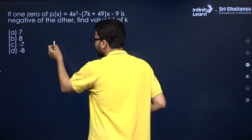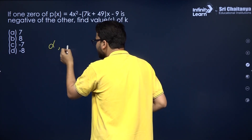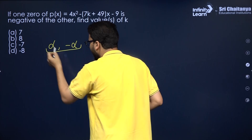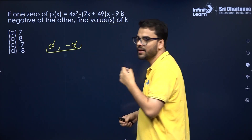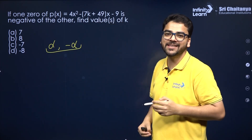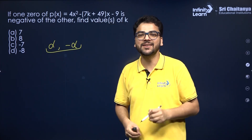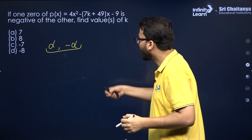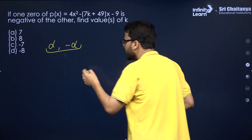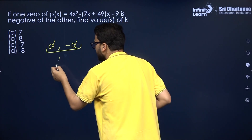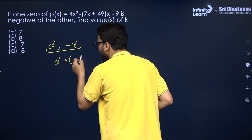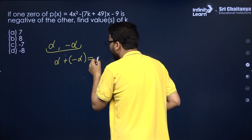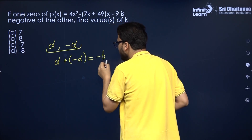Suppose one zero is alpha and the other zero is minus alpha. Whenever you get a question like this — that one zero is the negative of the other — you take the sum of the zeros. The sum of the zeros is equal to −b/a.